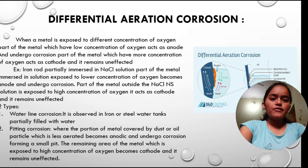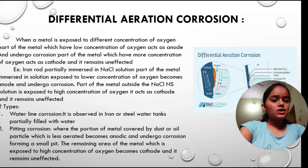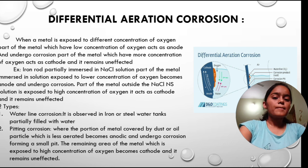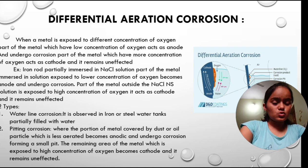Differential aeration corrosion: when a metal is exposed to different concentrations of oxygen, the part of the metal which has low concentration of oxygen acts as anode and undergoes corrosion, while the part which has more concentration of oxygen acts as cathode and remains unaffected. Example: an iron rod partially immersed in NaCl solution — the part immersed in solution exposed to lower concentration of oxygen becomes anode and undergoes corrosion, while the part outside the NaCl solution exposed to high concentration of oxygen acts as cathode and remains unaffected.